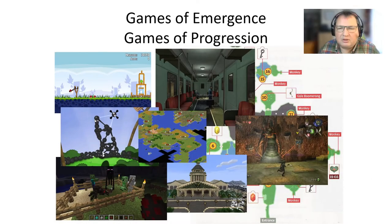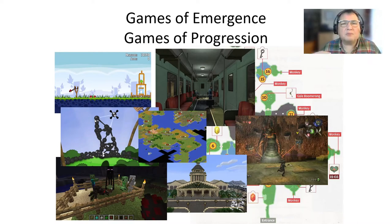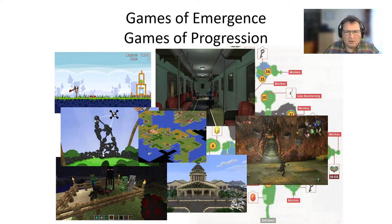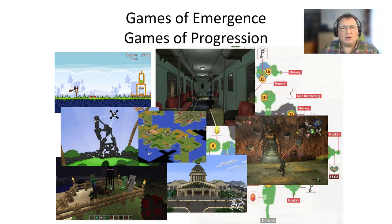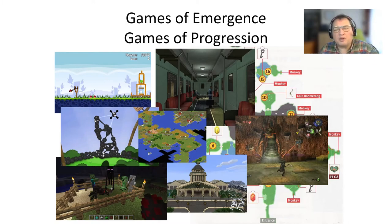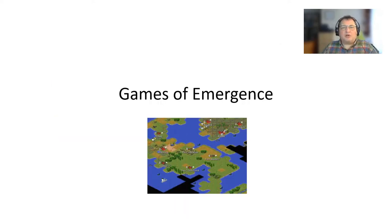We have now concluded the introductory part of this lecture. In the second stage, I will be talking about two aspects of games: games of emergence and games of progression. This doesn't mean that these are two separate species of games — usually each concrete game title will somehow combine the emergent and progressive aspects. So first, games of emergence.